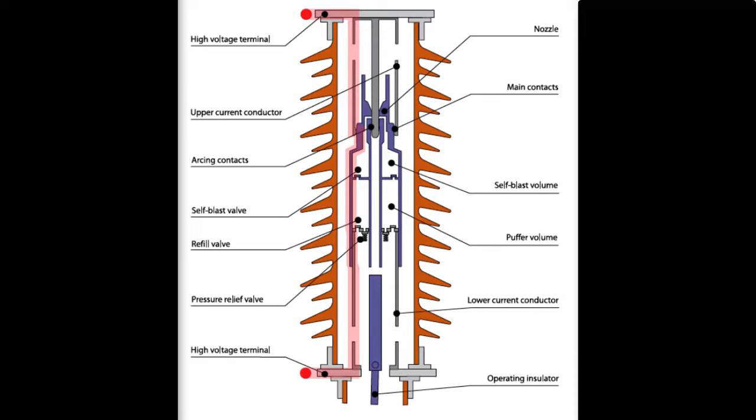If the current is low enough to not cause the breaker to self-blast, the topology of the breaker operates normally. As you may suspect, a self-blast breaker requires more maintenance after a self-blast event than a standard puffer breaker does before it is in normal operation condition again.